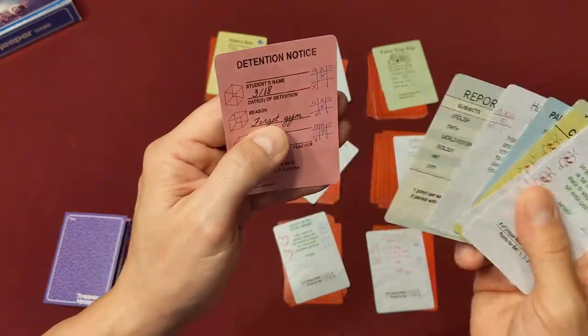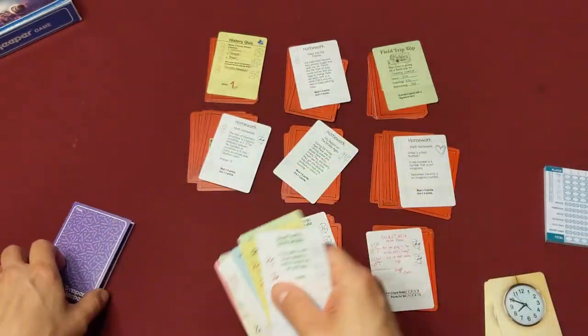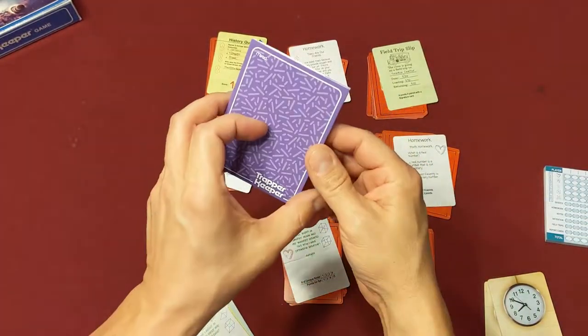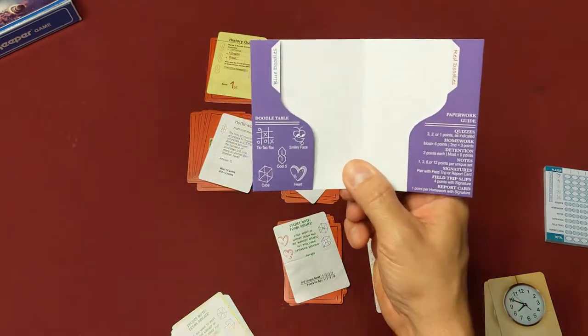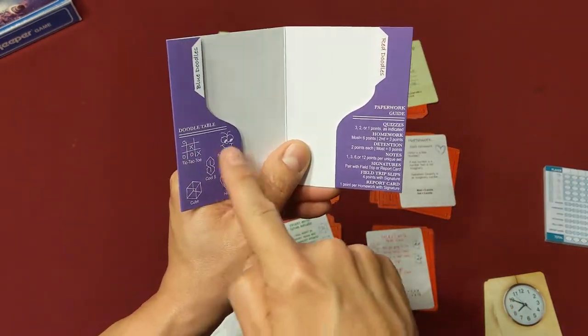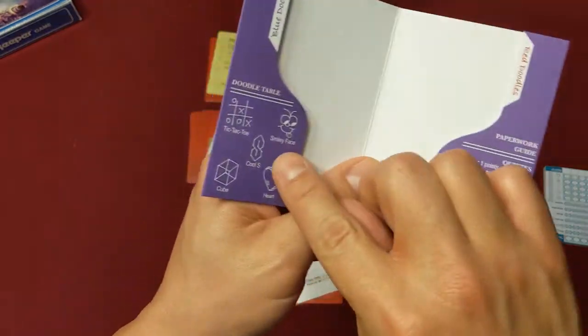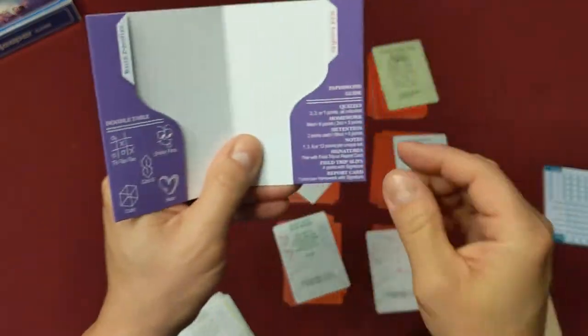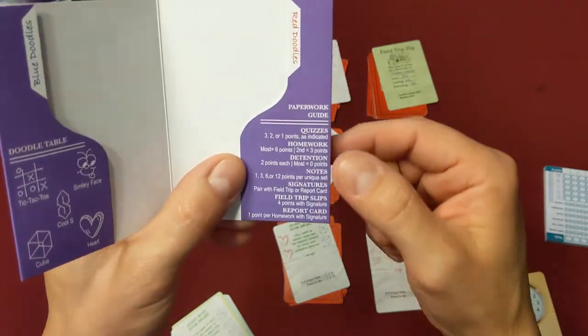There's homework, report cards, and an attention notice. You also have these handy-dandy little folders that are so cute, and it's got your little doodle table here on the left-hand side which actually comes into play in the game, believe it or not. Remember that cool S you used to draw when you were a kid? And then over here on the right, this shows you the breakdown of the score.